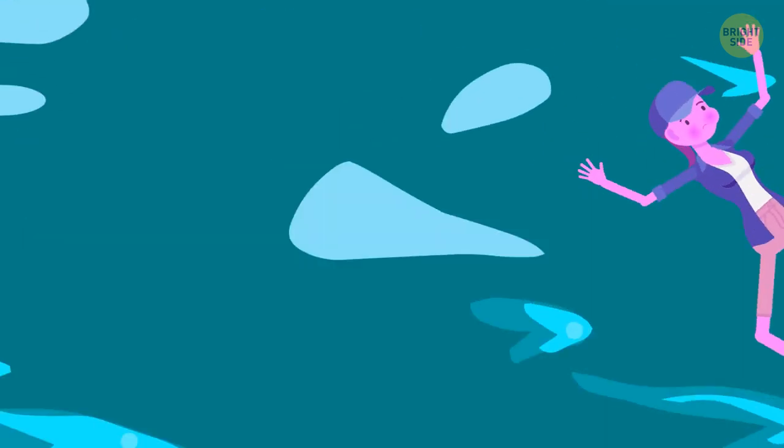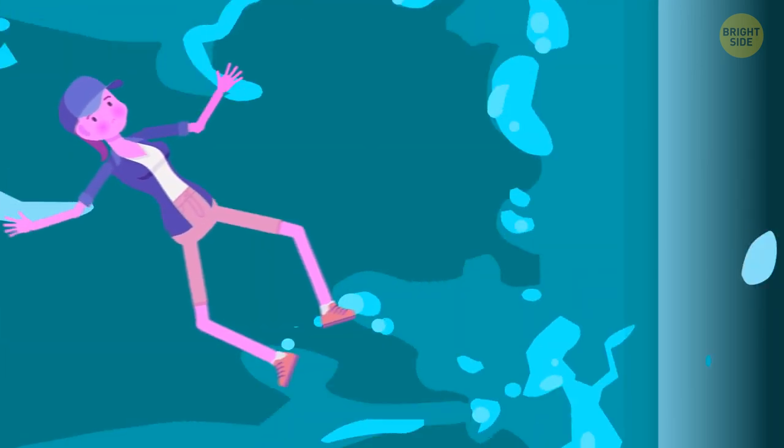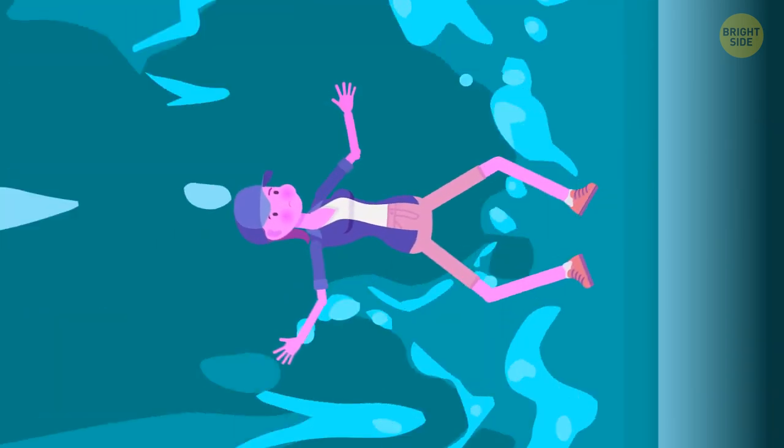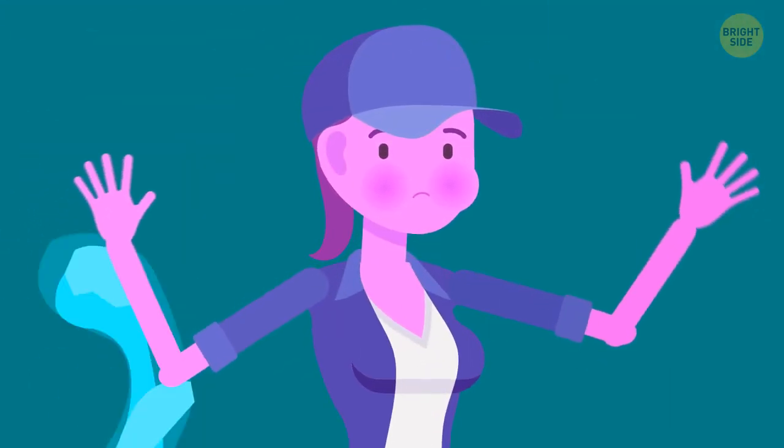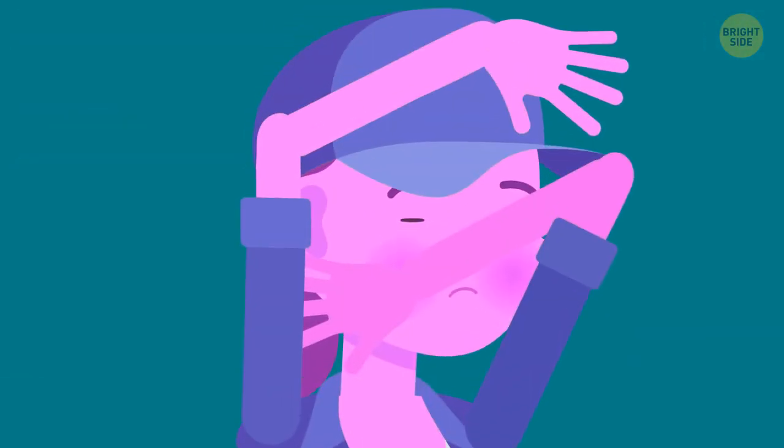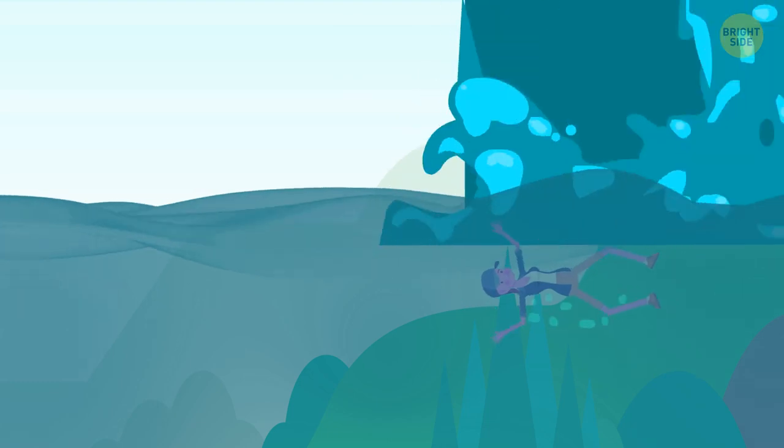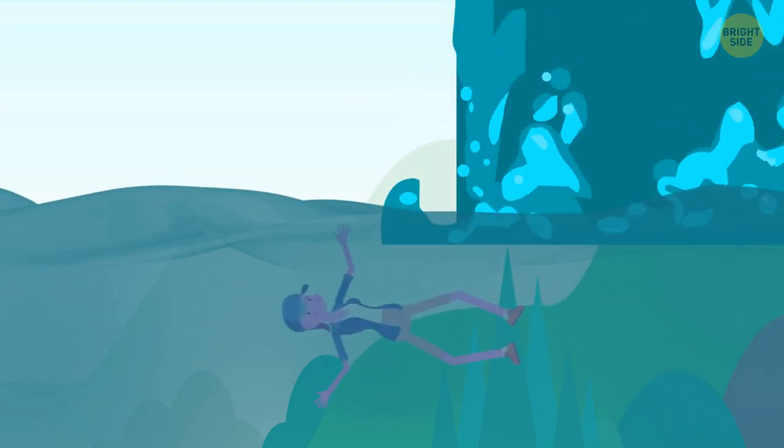To survive a waterfall plunge, take a deep breath as you're getting close to the edge. Reposition your body to go down feet first. Wrap your arms around your head and seal your nose from water with your elbows. Tense your muscles, put your legs together, and close your mouth and eyes as tight as you can. When you get to the bottom, start swimming away from the waterfall while you're still underwater.